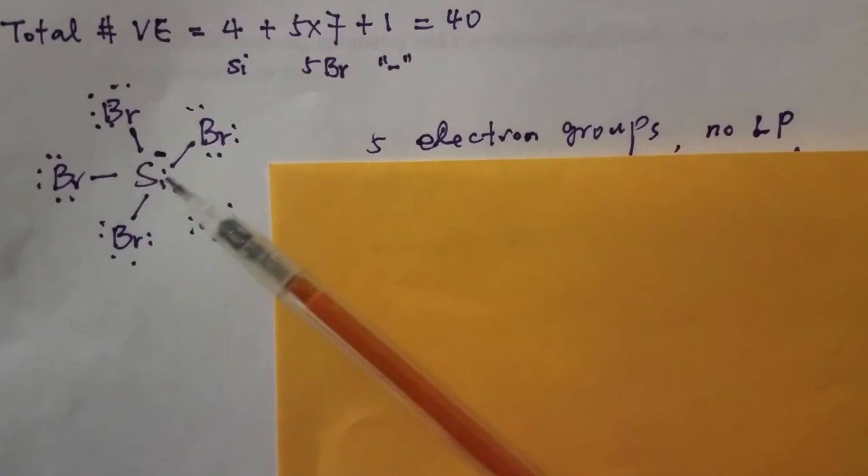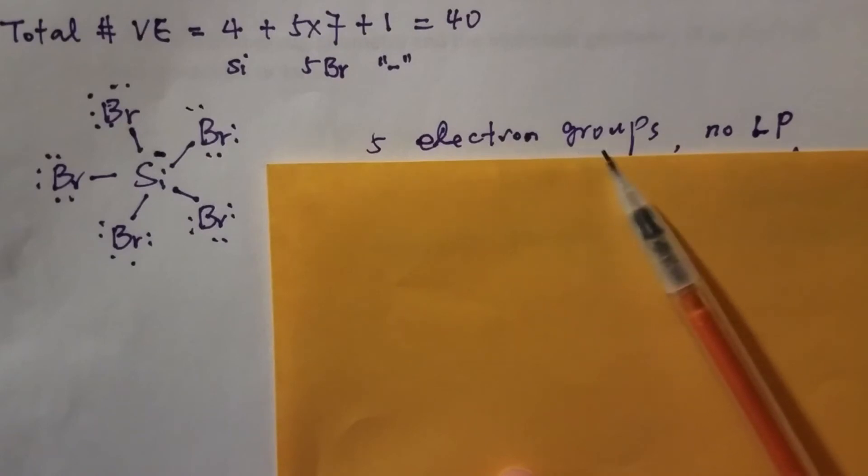Surrounding the central atom, there are five electron groups. There is no lone pair. This is just a negative charge sign, that's not a lone pair. So no lone pairs, the electron geometry or electron group geometry should be the same as the molecular geometry. Both electron geometry and the molecular geometry should be the same.